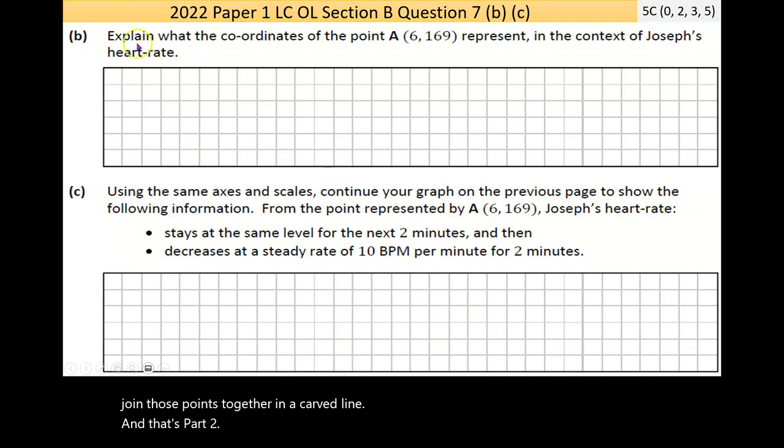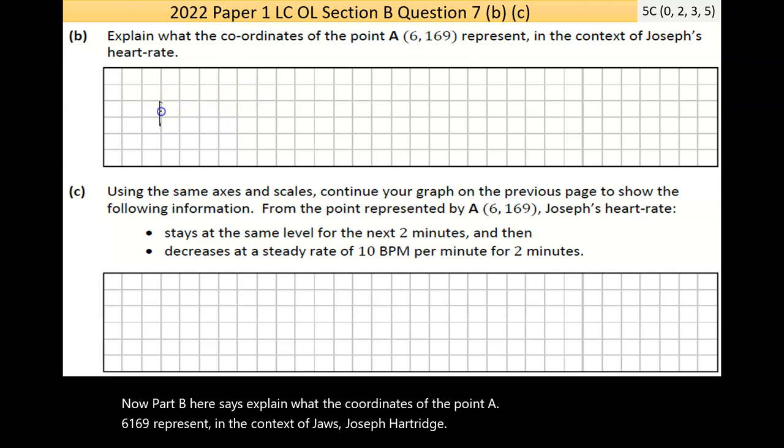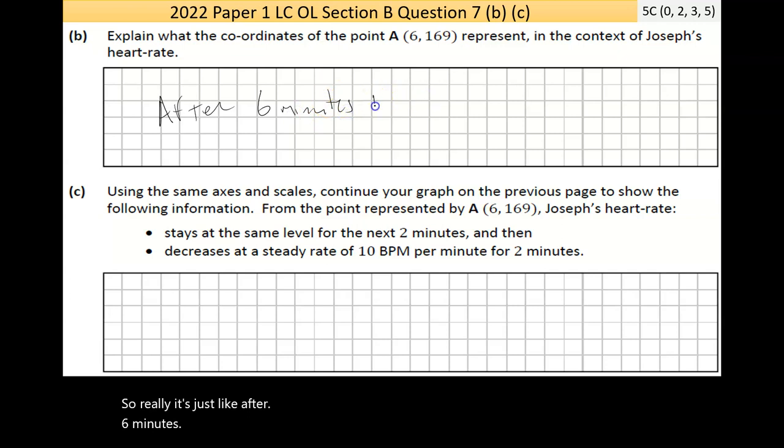Part B says explain what the coordinates of the point A, (6, 169) represent in the context of Joseph's heart rate. Really, it just means after 6 minutes, his heart rate is 169.